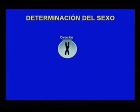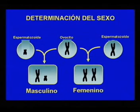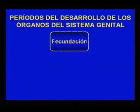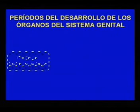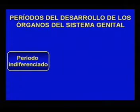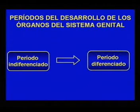La determinación del sexo cromosómico ocurre en el momento de la fecundación. El ovocito normal siempre presenta un cromosoma sexual X. Si el espermatozoide aporta 1Y, el sexo será masculino, y si aporta 1X, será femenino. Aunque el sexo se determina desde la fecundación, hasta aproximadamente la sexta semana las características de los órganos sexuales son similares para los dos sexos, distinguiéndose un periodo indiferenciado, en el que por las características morfológicas de los órganos genitales es imposible identificar el sexo del embrión, y un periodo diferenciado en el que sí es posible su identificación.